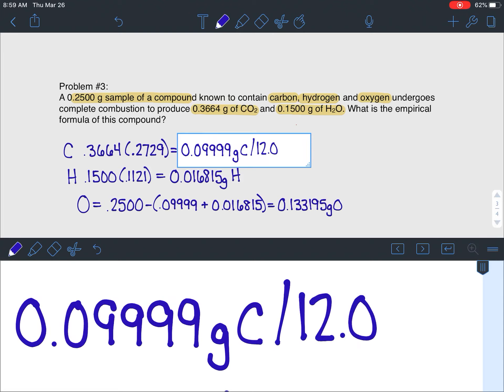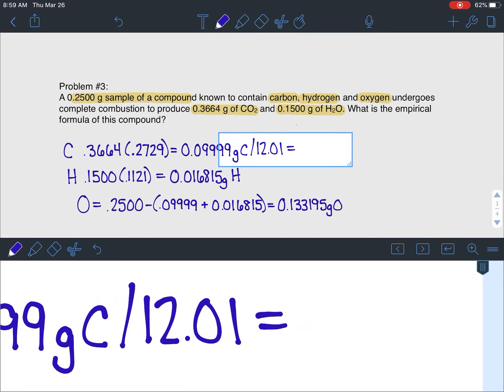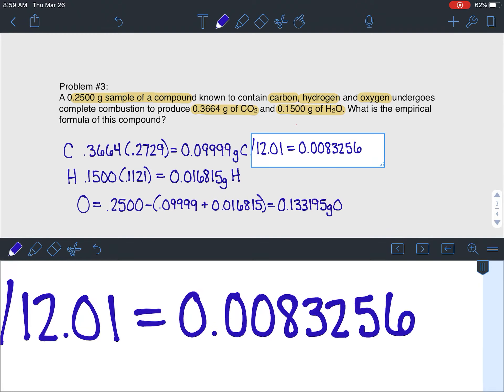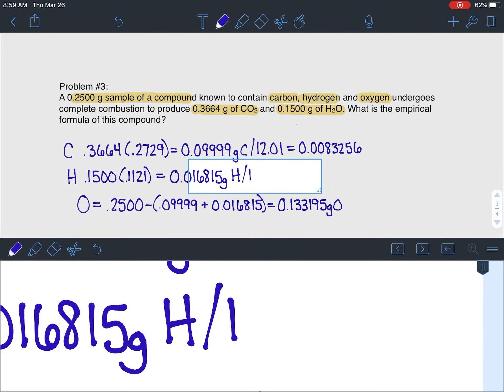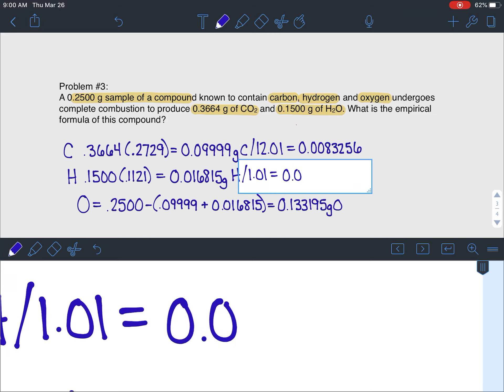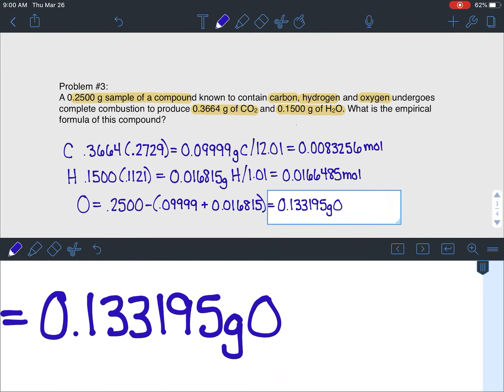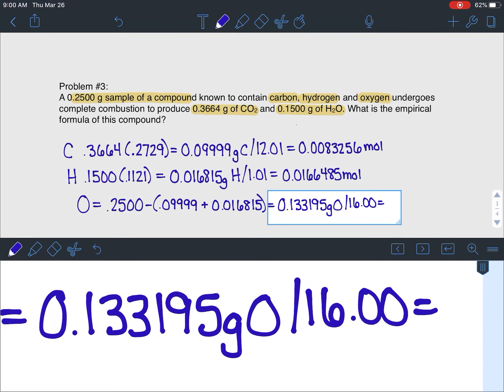We're back to what we've done in the past. So we're going to go ahead and divide these out by their molar masses. Make sure you're using the correct molar masses. I should be labeling these. These are moles. And the last one, dividing this one by 16.